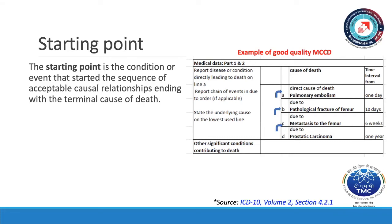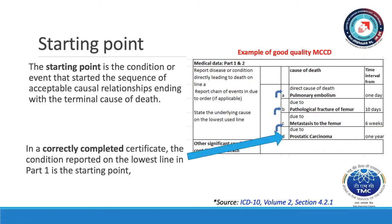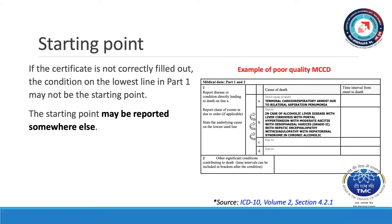An important concept in applying ICD coding rules is understanding the term starting point. The starting point is the condition or event that started the sequence of acceptable causal relationships ending with the terminal cause of death. In a correctly completed certificate, the condition reported on the lowest line in Part 1 is the starting point. If the certificate is not correctly filled out, the condition on the lowest line in Part 1 may not be the starting point — the starting point may be reported somewhere else. A condition that is provisionally considered as the starting point could be caused by something else; for example, the starting point may change several times as the instructions are applied to the certificate.